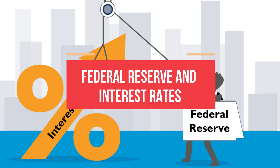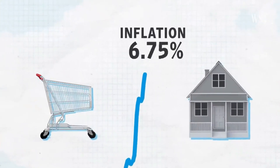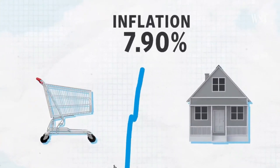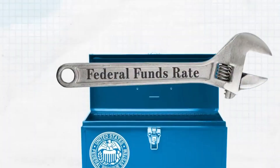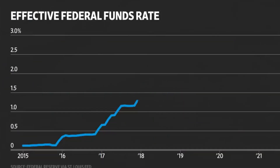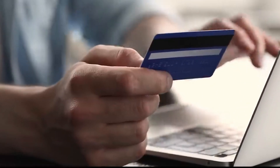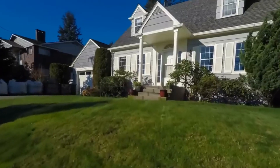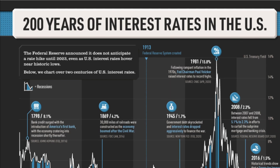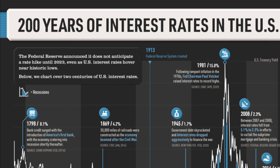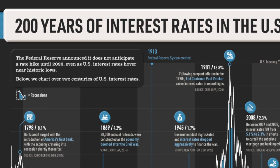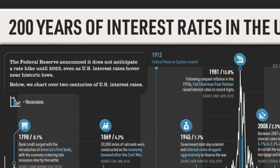The Federal Reserve's primary responsibility is overseeing U.S. monetary policy, which entails regulating the creation of new money in the economy. The Federal Reserve has a number of tools at its disposal for conducting monetary policy, but interest rate manipulation stands out as the most visible and successful. When the Fed raises interest rates, they are referring to the Federal Funds Rate.